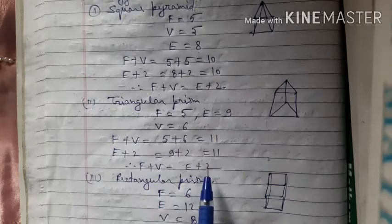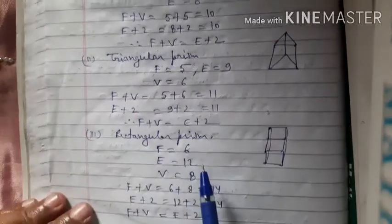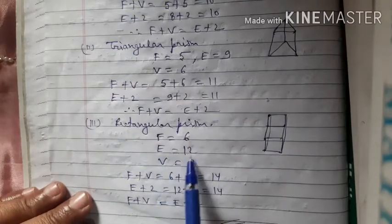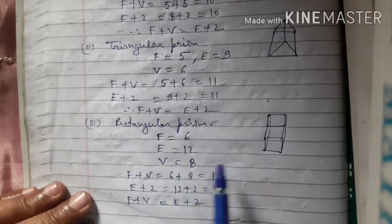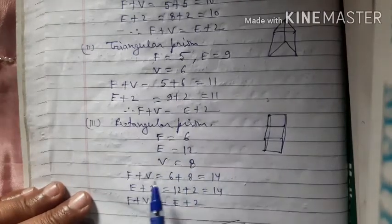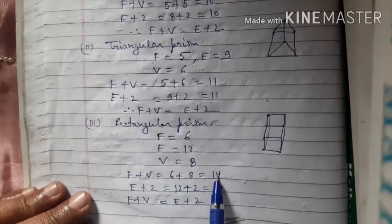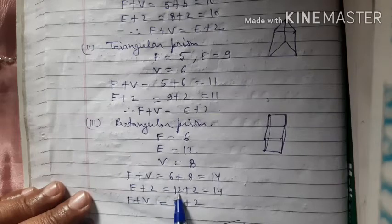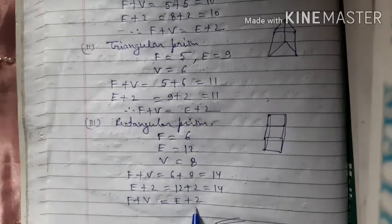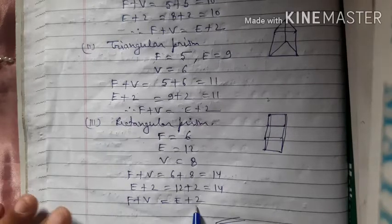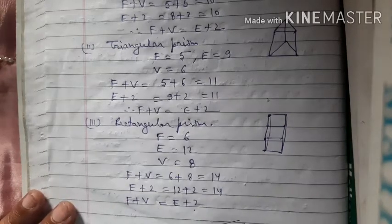For a rectangular prism: faces = 6, edges = 12, vertices = 8. F + V = 6 + 8 = 14, and E + 2 = 12 + 2 = 14. Therefore F + V = E + 2 — Euler's formula is verified for the rectangular prism as well.